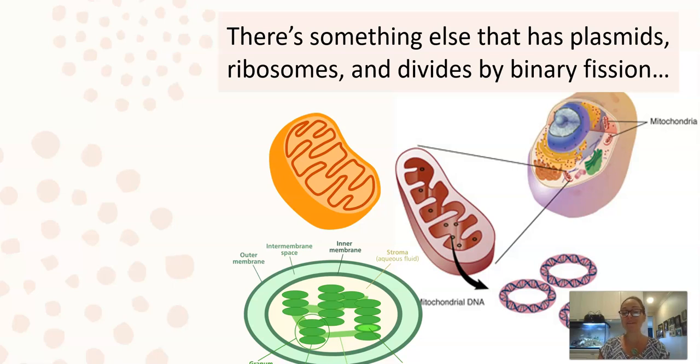Now, when we look at our chloroplast and our mitochondria, we also notice that these two organelles have a double membrane. So if you think about like a lysosome, a lysosome is just a membrane bound organelle. However, here you can see in the mitochondria and the chloroplast, they have two membranes. Now, where did those membranes come from?